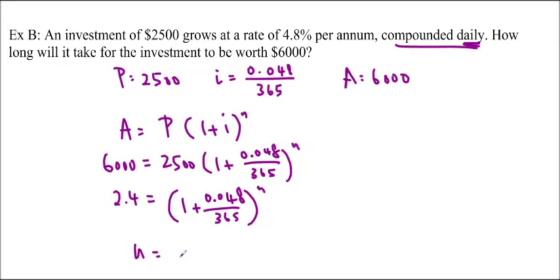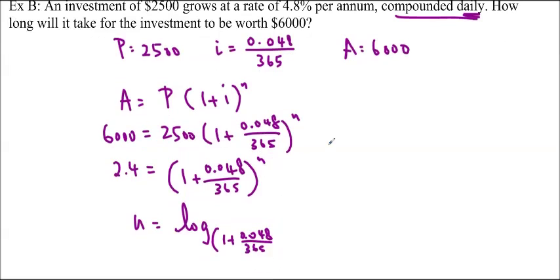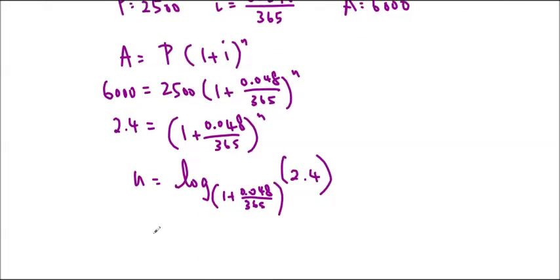Let's put it into logarithmic format. We'll get N equals log base 1 plus 0.048 over 365 of 2.4, and the reason I'm putting that in there like that is so that I can get the exact value. And you type it in through a calculator, I get N is equal to 6657.7, and this is in days. Don't forget, so if you want to do it in years, we'll divide by 365. We'll get 18 years and 3 months-ish.